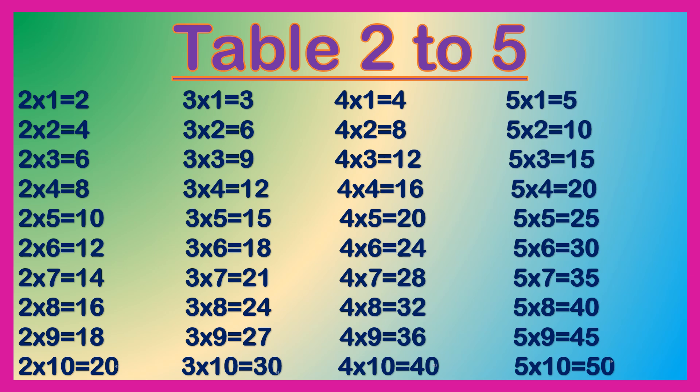4 1s are 4, 4 2s are 8, 4 3s are 12, 4 4s are 16, 4 5s are 20, 4 6s are 24, 4 7s are 28, 4 8s are 32, 4 9s are 36, 4 10s are 40.